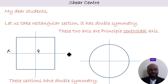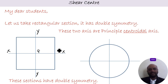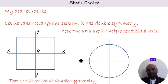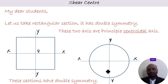The rectangular section has double symmetry. The x and y axes are the principal centroidal axes. If you fold along the x-axis, you get symmetry; similarly along the y-axis. The same applies to a circular section. The center of gravity G lies at the intersection of these two principal centroidal axes.